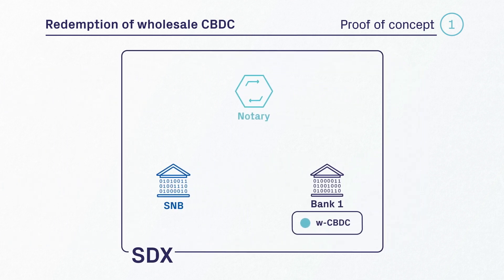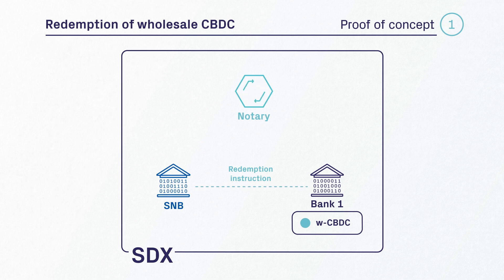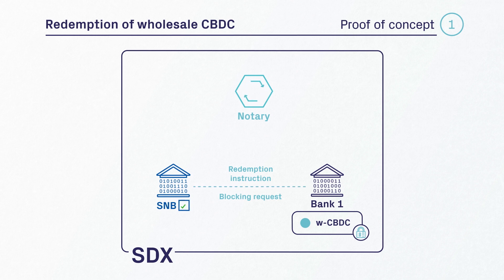To initiate the redemption of wholesale CBDC, bank one enters a redemption instruction — or as it's called on the SDX platform, a detokenization instruction. The redemption request is forwarded to the SNB node, including a request to block the amount of wholesale CBDC to be redeemed. The SNB node verifies the authenticity of the wholesale CBDC by checking whether the token has been signed with the private key of the SNB. The SNB node then forwards the redemption request, including the blocking request, to the notary node.